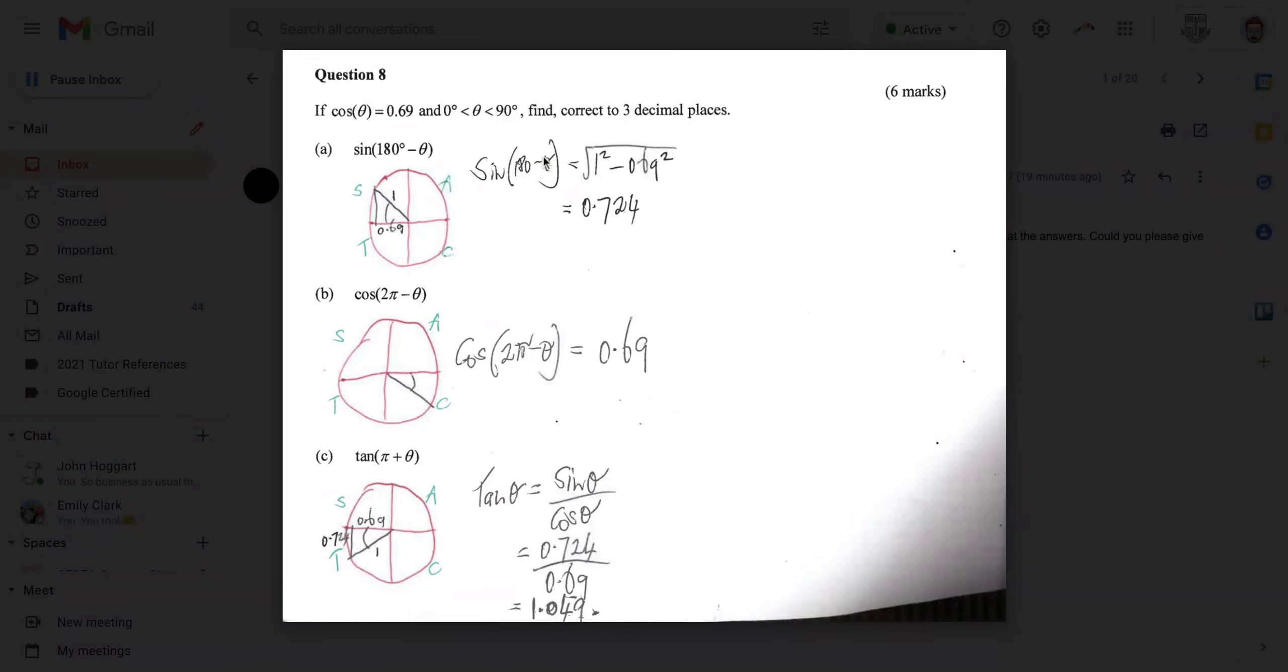So we've got sine of 180 minus theta is the same as sine of theta, which is equal to the square root of 1 squared minus 0.69 squared. So 1 squared, well, don't worry about the square, 1 minus cos squared theta, 0.69 squared. And then the calculation gets you to 0.724.